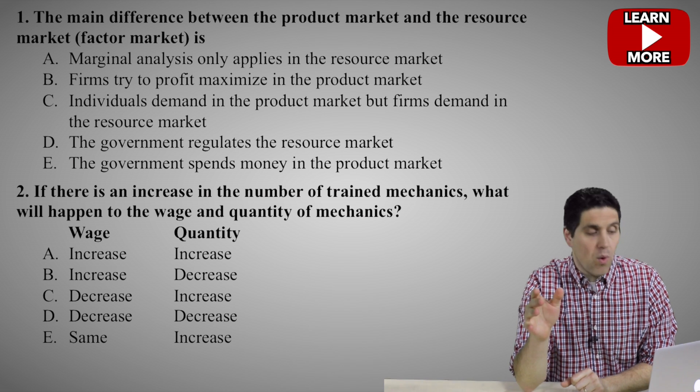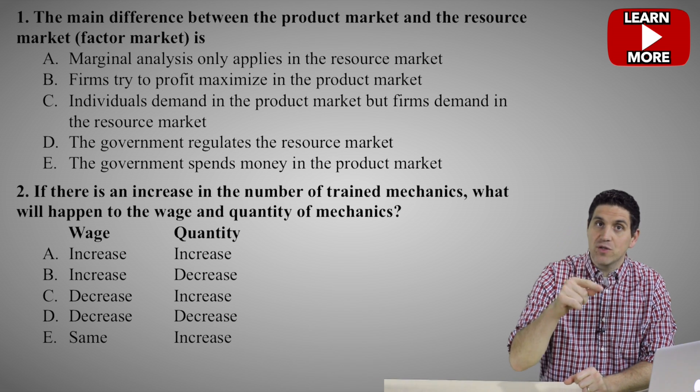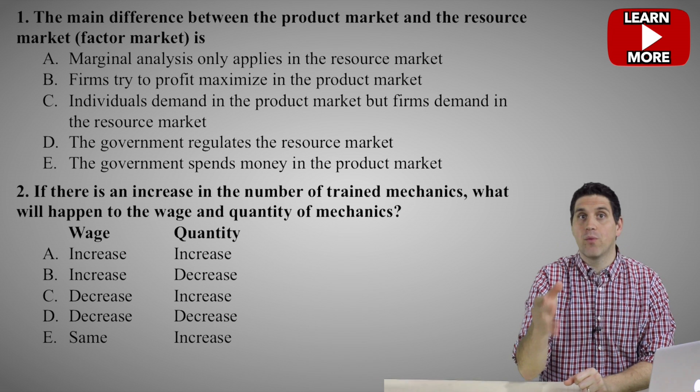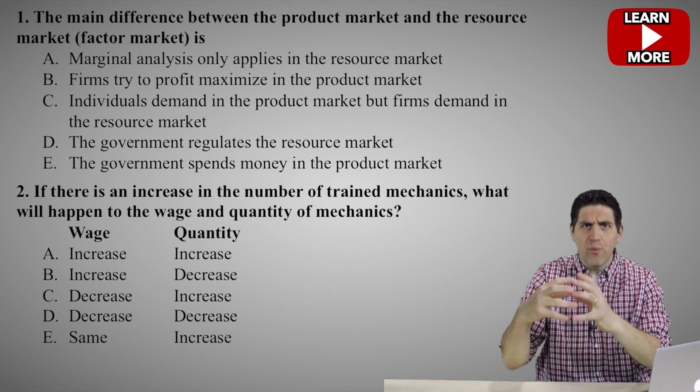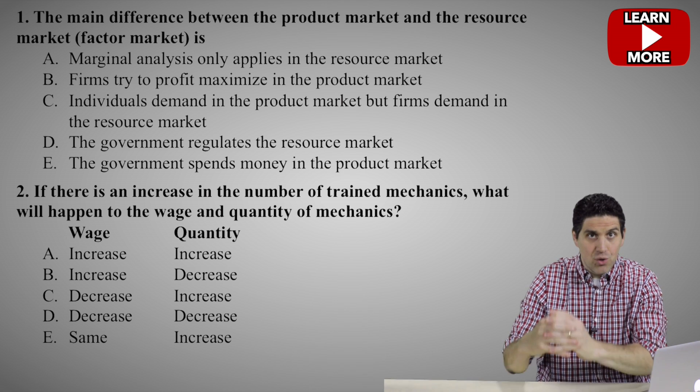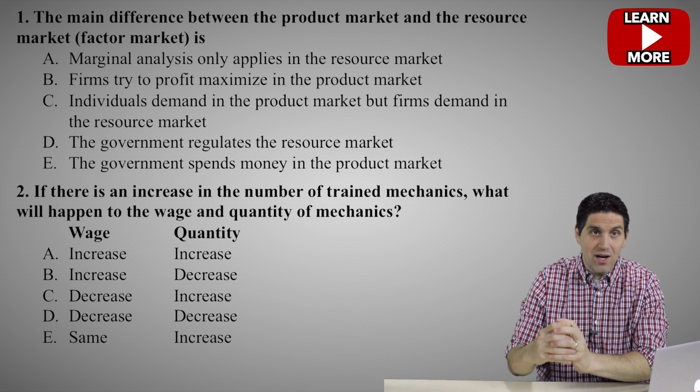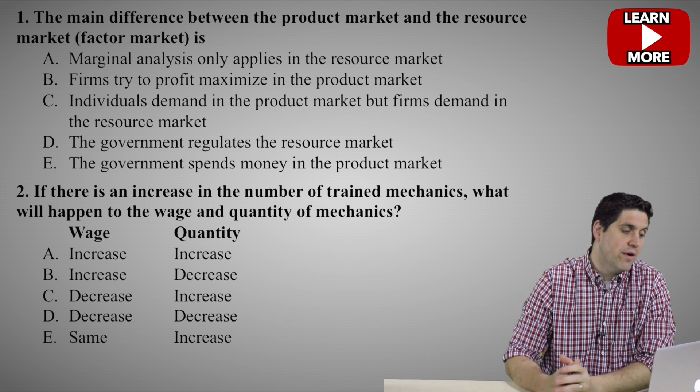In question number one, it's asking the difference between the product market and the resource market. The resource market is unit five, so you've got to know the difference. The answer here is...